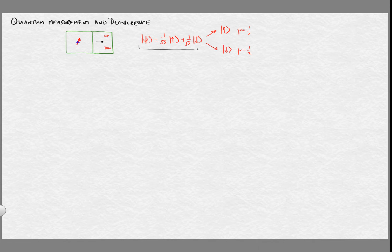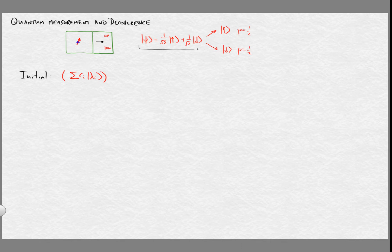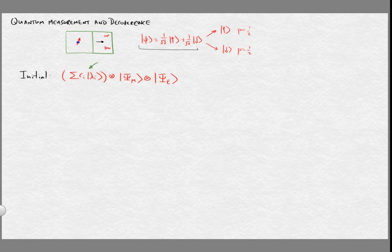Let's understand in more detail how this works. The idea is that we want to consider not just our spin, but the spin, the detector, and the environment of the detector — all described by quantum mechanics. We'll have some initial state where we might have a superposition with basis elements λ_i for some observable we're going to measure, some initial state for the detector system, and some initial state for the environment. It's a simplification to assume this initial state is a product state, but that will be fine for our purposes.